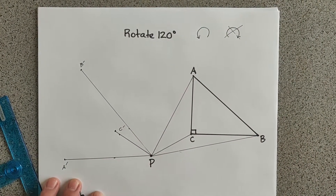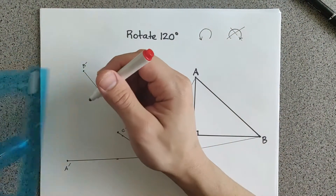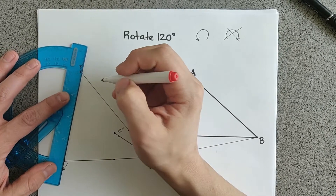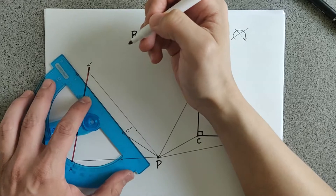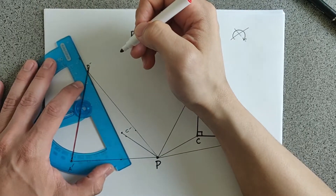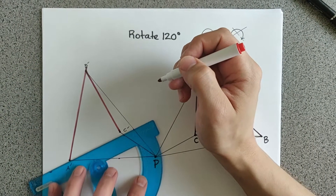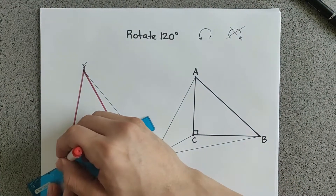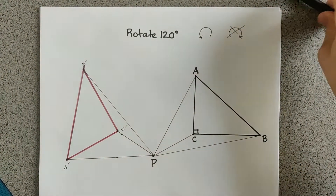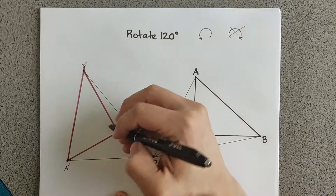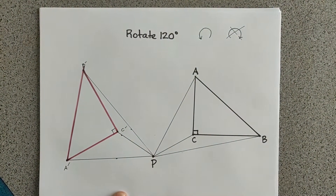So we have our three points of our triangle — A prime, B prime, and C prime. Last thing we have to do is just connect the dots. Line it up from A to B, from B to C, and then from A to C. So here is your right triangle — we just rotated it 120 degrees.